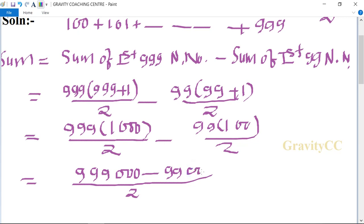So after subtracting, 989,100 upon 2. So divide by 2, so it